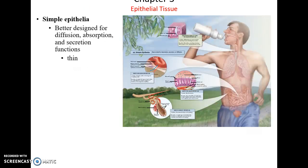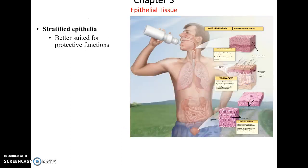Simple epithelia are great for diffusion, absorption, and secretion, and they're very thin. Stratified epithelia are great for protection — their multiple layers help protect the underlying tissue.